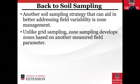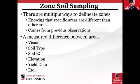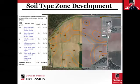Moving beyond grid sampling to targeted variability via zone management. Unlike grid sampling, zone sampling develops zones based on another measured field parameter. There are multiple ways to delineate these zones, and you need to know that a specific area is different from others — which usually comes from previous observations. A measured difference between areas can be visual, soil type, soil EC, elevation, yield data, or any other data layer you might think of. This is for fields where we do have levels of data we can build upon.